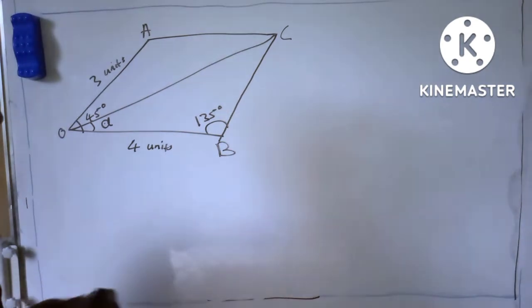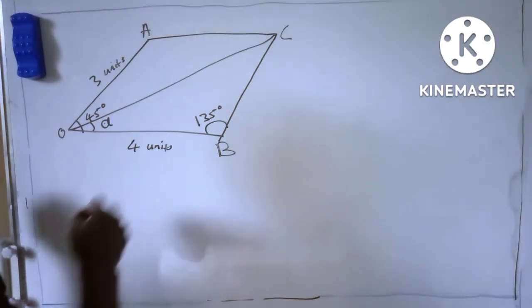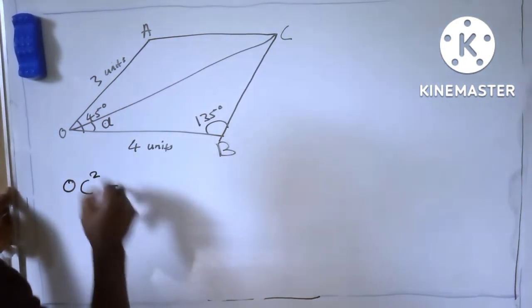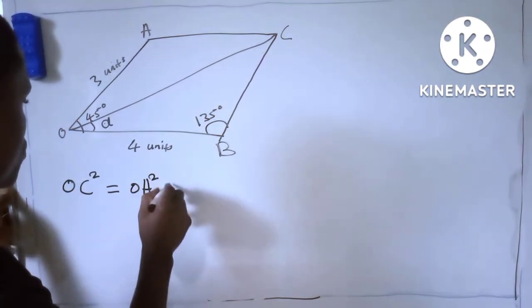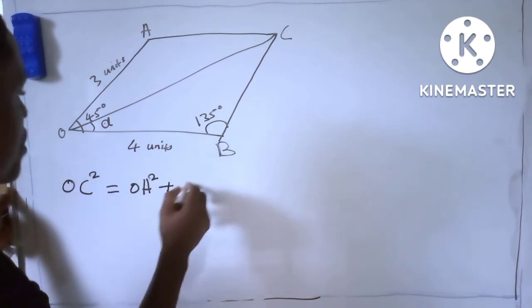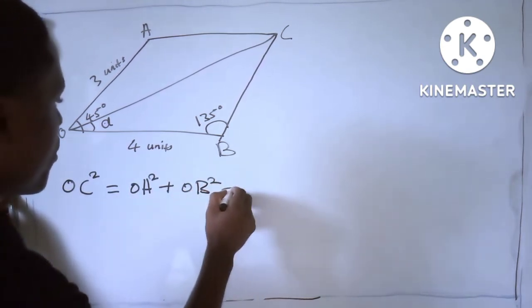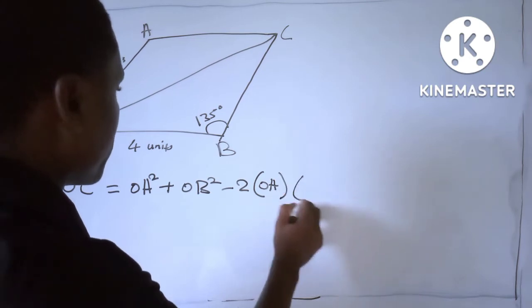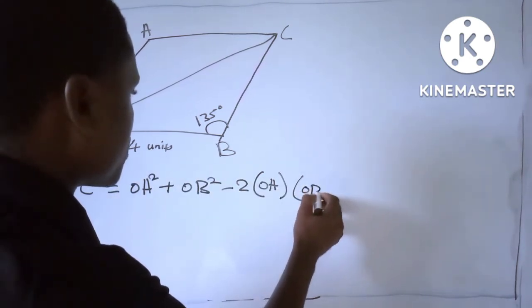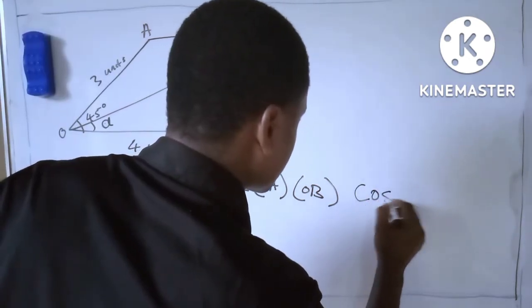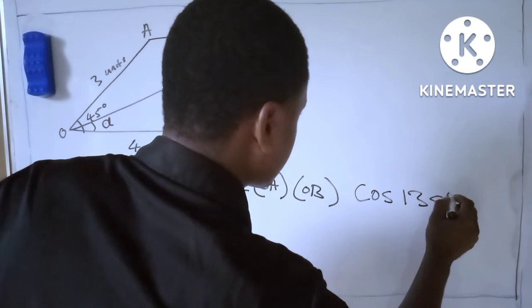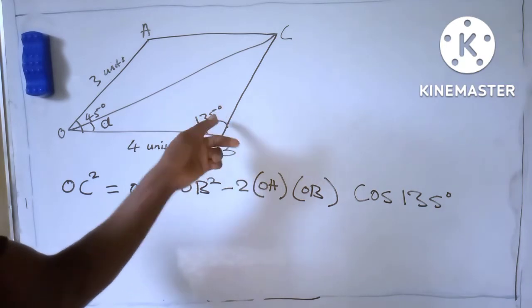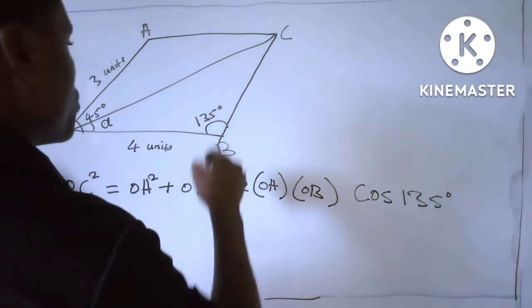We are going to use the cosine rule, which is: OC² = OA² + OB² − 2(OA)(OB) cos 135°.